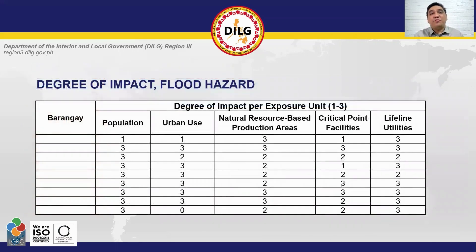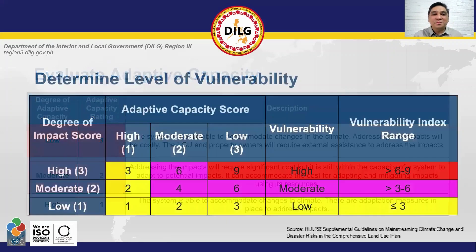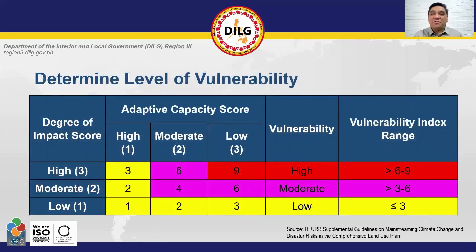This is an example of a flood hazard degree of impact table per barangay per exposure unit. In the same way, evaluate the adaptive capacity of each exposure unit per barangay. For adaptive capacity scoring, low has a score of 3, moderate has a score of 2, and high has a score of 1. Then determine the level of vulnerability by multiplying the degree of impact average score by the adaptive capacity average score per exposure unit.